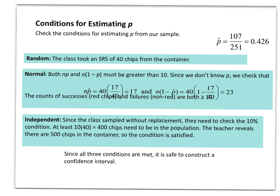So these are the three conditions for estimating p using a confidence interval. First of all, it does have to be random. And if you remember, everyone took out a random sample, mixed up the bag before we passed it on to the next group to make sure the next group had a simple random sample of 40 chips.